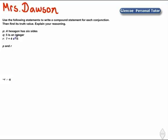Let's begin with the first one. Statement P is a hexagon has six sides. That statement is a true statement. The hexagon does have six sides.